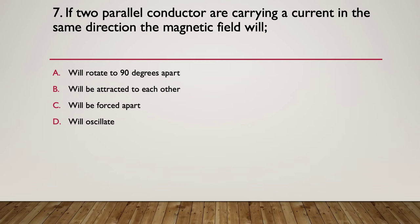Question seven, if two parallel conductors are carrying a current in the same direction, the magnetic field will do what? A, will rotate to 90 degrees apart. B, will be attracted to each other. C, will be forced apart. Or D, will oscillate. Pause here. Here's your hint. Draw a diagram that includes how the magnetic fields interact with each other.